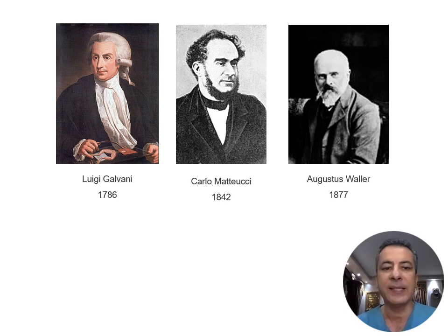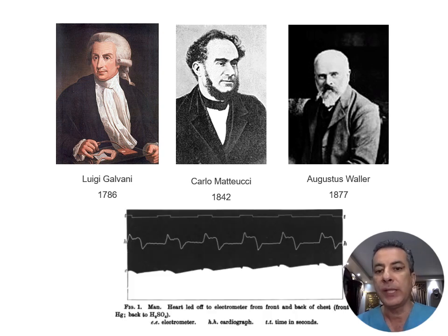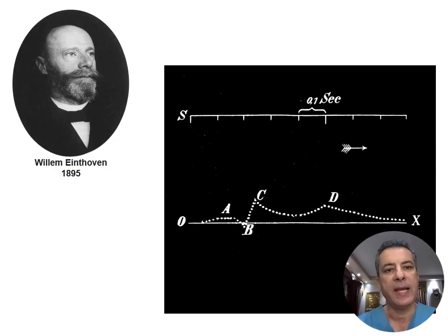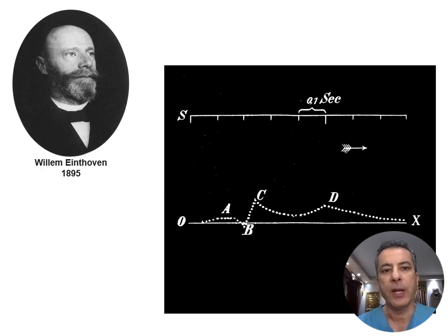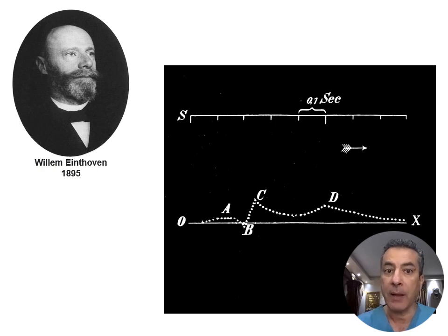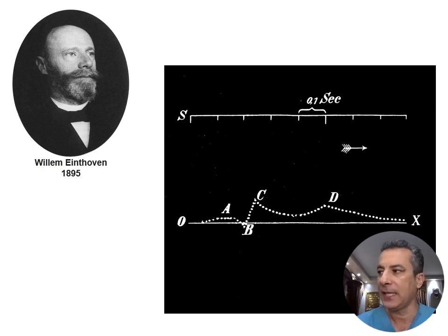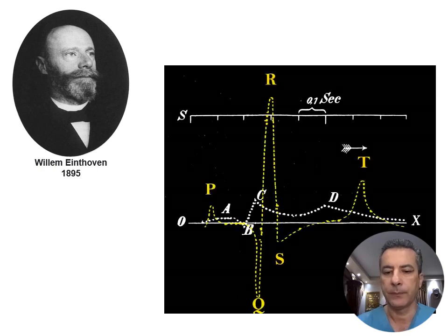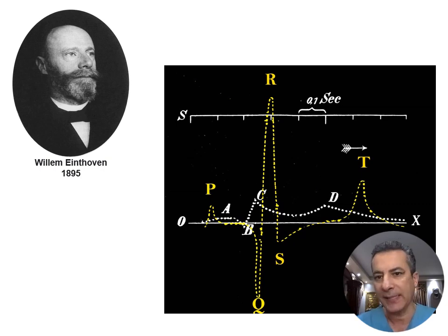Thirty-five years later, at St. Mary's Medical School in London, Augustus Waller recorded the first human cardiac electrical activity using a capillary electrometer. In 1895, inspired by Waller's work, German physician Wilhelm Einthoven made significant advancements, enhancing the capillary electrometer and devising a four-wave curve named A, B, C, and D. After applying mathematical corrections for the inertia of the electrometer, he introduced the now familiar five-wave ECG form: P, Q, R, S, and T — named using letters following A–D, aligning with Cartesian tradition.